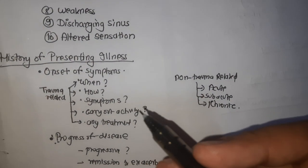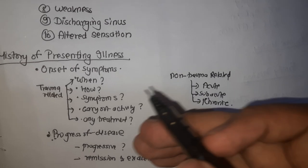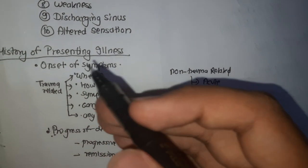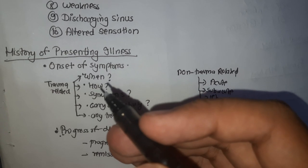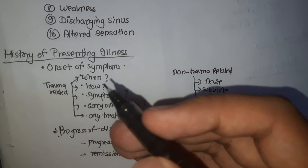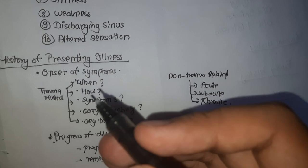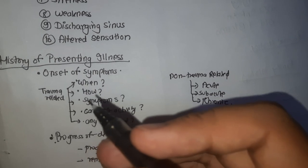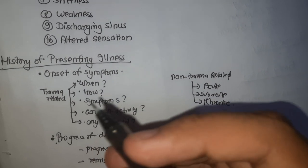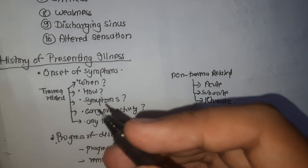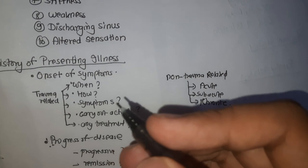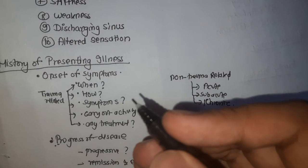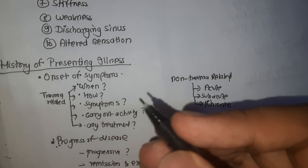Broadly, orthopedic diseases can be divided into two groups: trauma-related and non-trauma-related. The first question to ask while elaborating the history is whether there was any trauma before the onset of symptoms. A number of patients may falsely implicate an unrelated episode of trauma as the cause of their disease. Detailed inquiry into the nature of injury and the period between injury and onset of symptoms can help decide whether injury played a role.